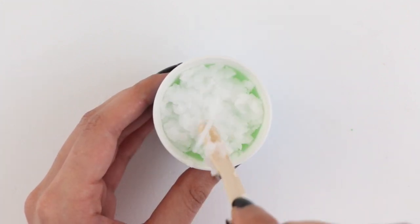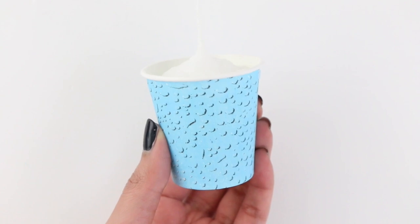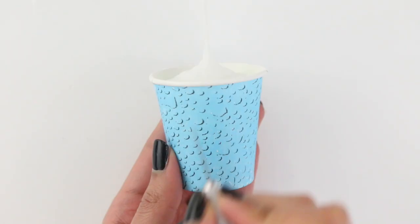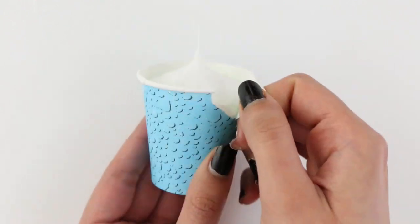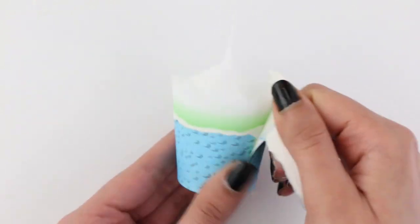Then you want to let this set, and I usually like to put my candles in the refrigerator for about an hour. Then I took my exacto knife and I kind of cut it a little bit. Now I'm just ripping off the paper cup.